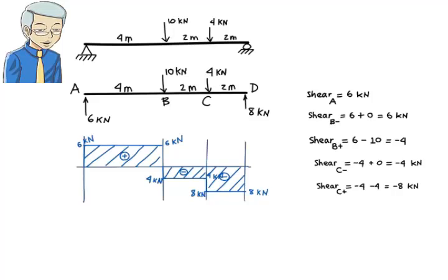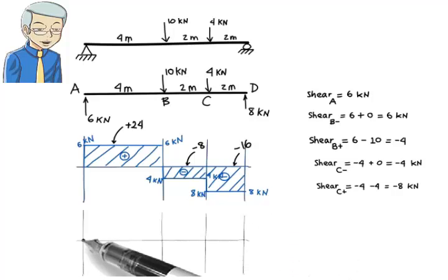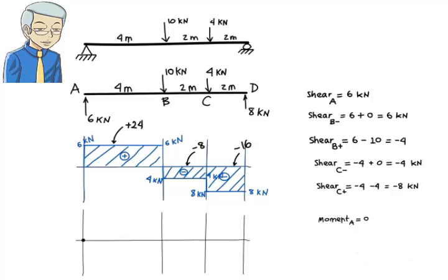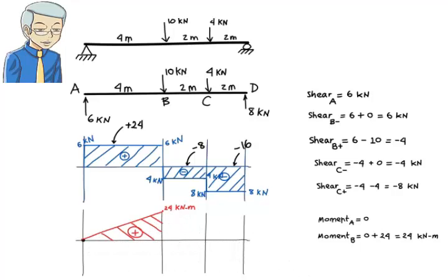To draw the moment diagram, let's start by calculating the area under the shear diagram in each segment. The shear area for segment AB is positive 24. For segment BC, the area is negative 8. And for segment CD, the area is negative 16. For segment AB, moment at the left end is 0, since there is no moment at the pin support at A. Then the moment at the right end of the segment is 0 plus 24, or 24. Since shear is constant in the segment, moment is linear. If we view shear and moment graphs as polynomials, the degree of the moment polynomial should be one higher than that of the shear polynomial. Shear is a polynomial of degree 0, so moment has to be represented as a polynomial of degree 1 — an equation for a line. So moment varies linearly in the segment.